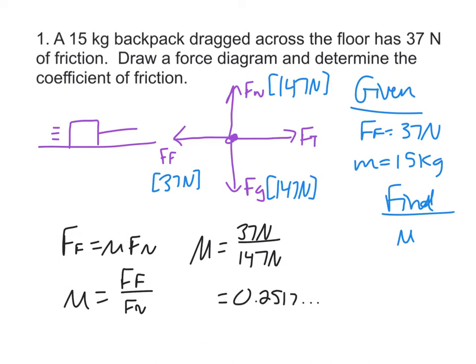Again, mu is unitless. Two sig figs, so mu is about equal to 0.25. Pretty simple.